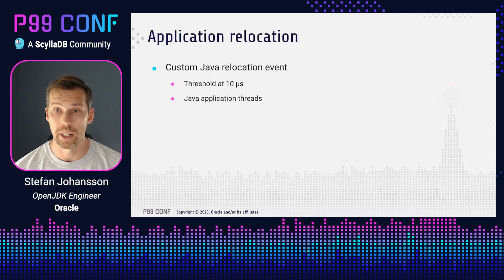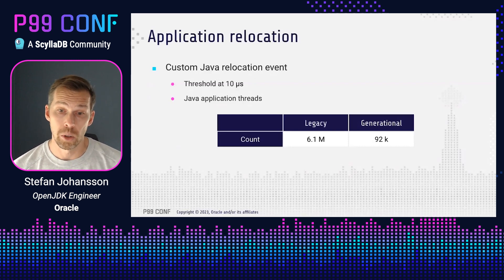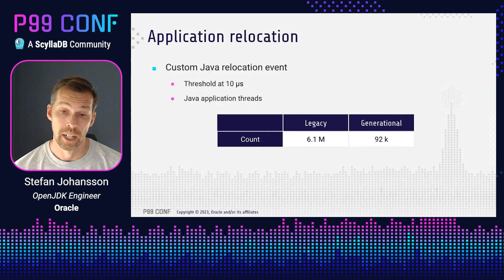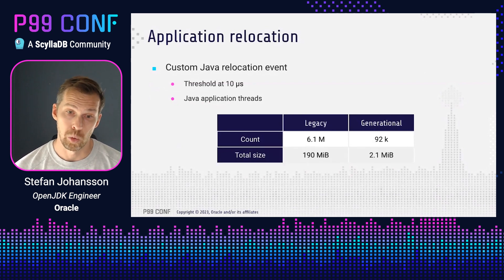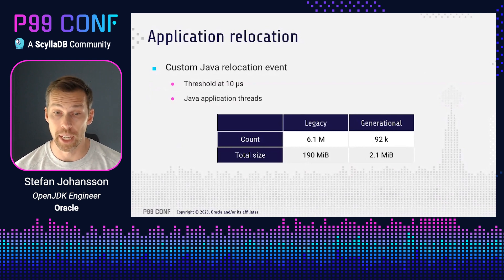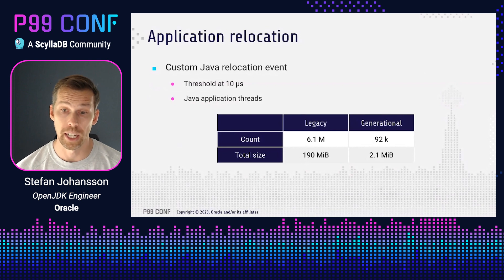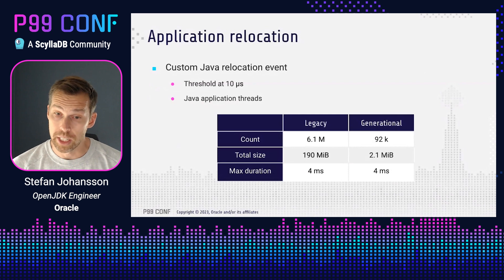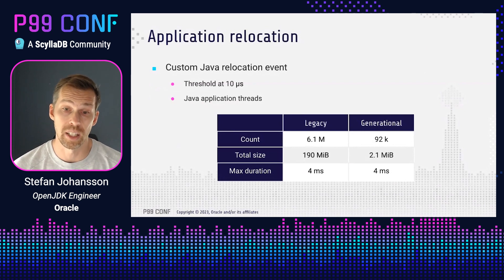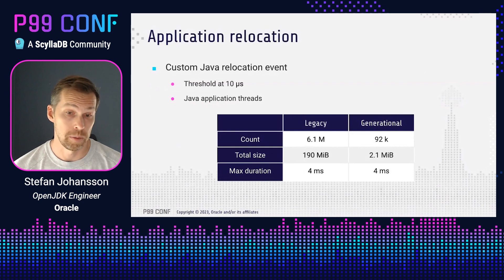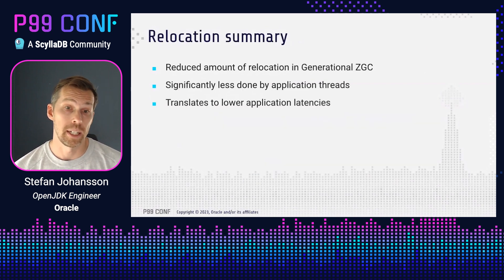Looking at these on a thread level doesn't make sense because there are too many events, so we look at a breakdown in table format. With legacy mode, we get 6.1 million events compared to generational ZGC which only has 92,000 events — quite a reduction with generational ZGC, basically a reduction of 99%. The same goes for the total size relocated by the Java application threads, also down around 99%. If we look at the max duration of these events, there is no real difference — and this is expected because the time it takes to do one relocation isn't the problem. The problem is that with legacy mode we do so many of them, basically back to back, for short periods of time, which adds up to long application latencies.